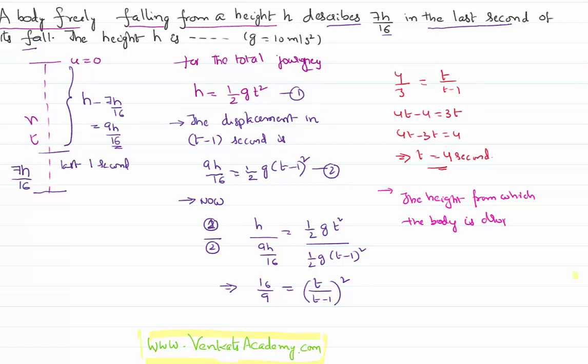The height from which it has fallen, so that it covers a time of 4 seconds, is H = (1/2)gt² = (1/2)g(4²) = 16g/2 = 8g. Since g = 10 m/s², it is dropped freely from a height of 80 meters. That's it.